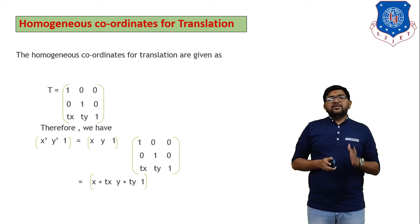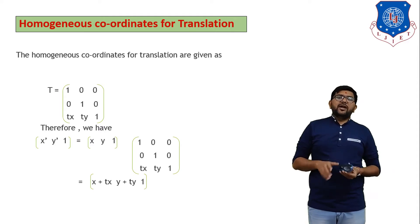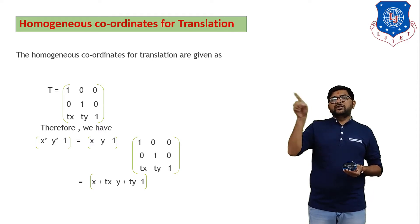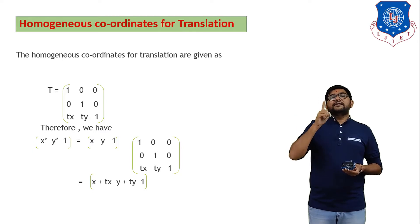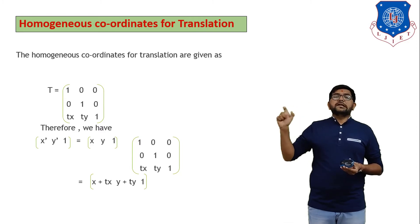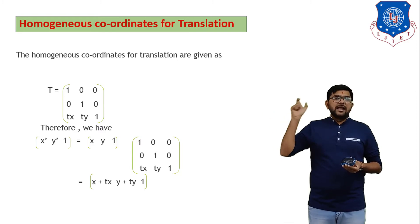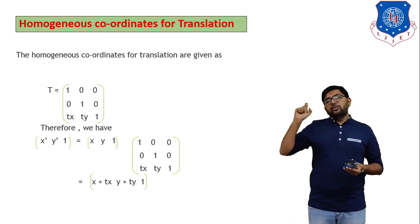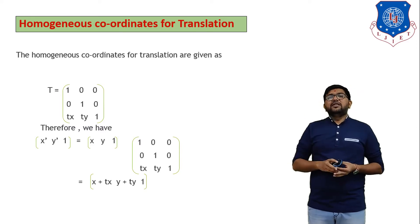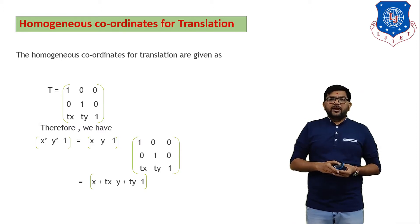You have to remember the equation of the translation matrix: [1, 0, 0 / 0, 1, 0 / TX, TY, 1]. This is the homogeneous translation matrix, and we will use this equation in numerical problems.